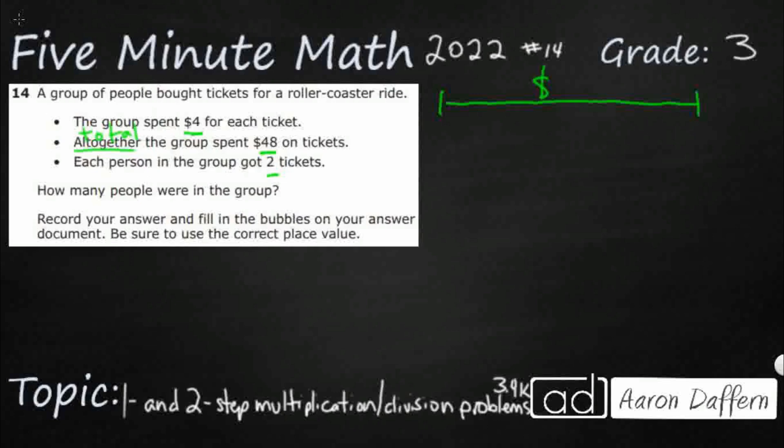Alright, so I've got $48. And then they spent four bucks on each ticket. So here's my question. How many sets of $4 can I get out of 48? Because if I can do that, then I can figure out how many tickets there are and that's going to help me. So how many fours go into 48?